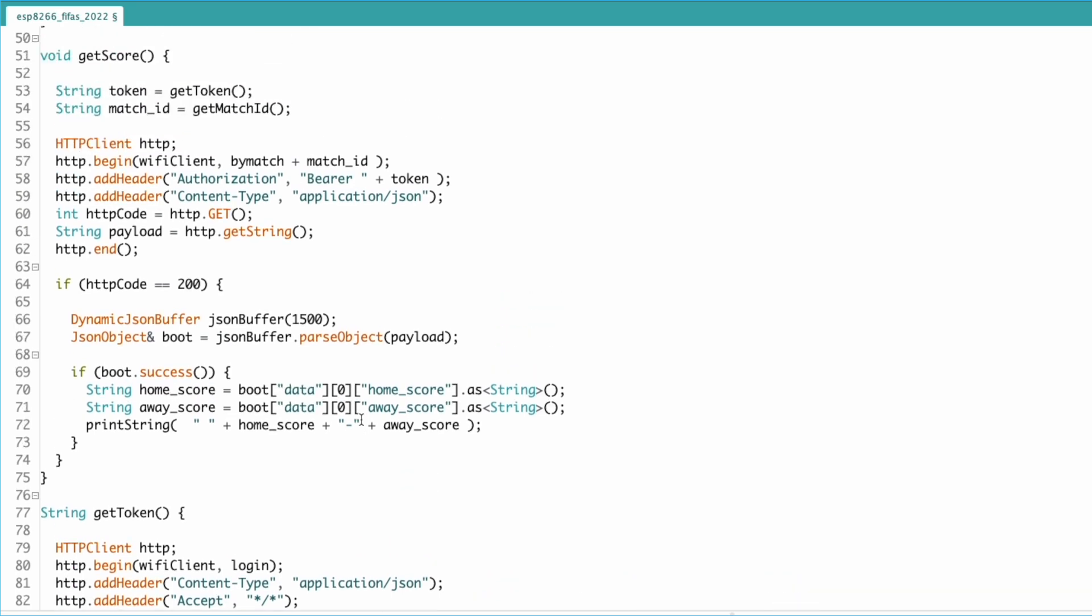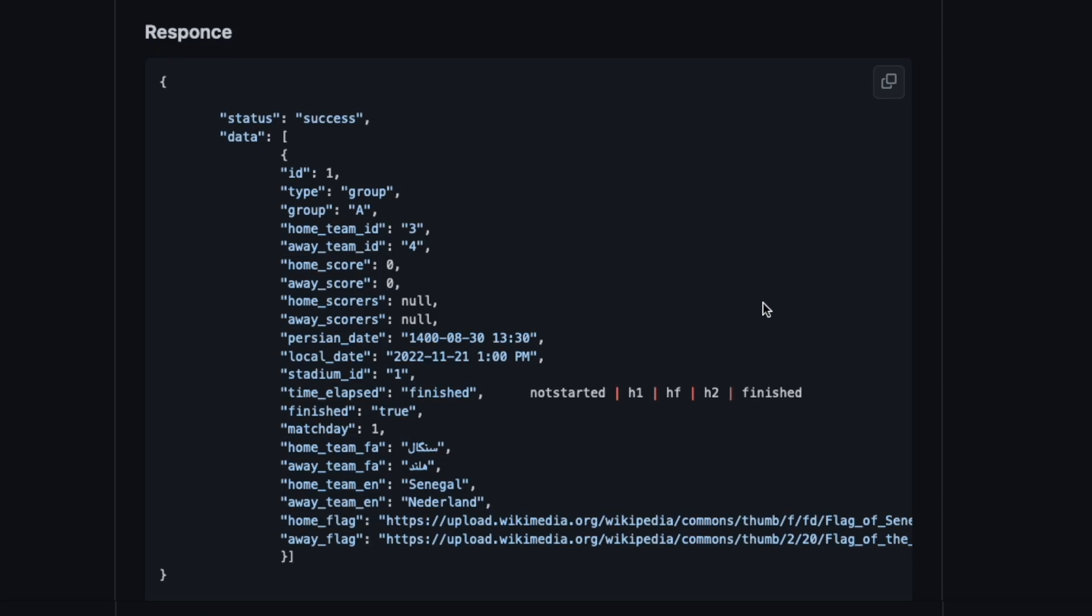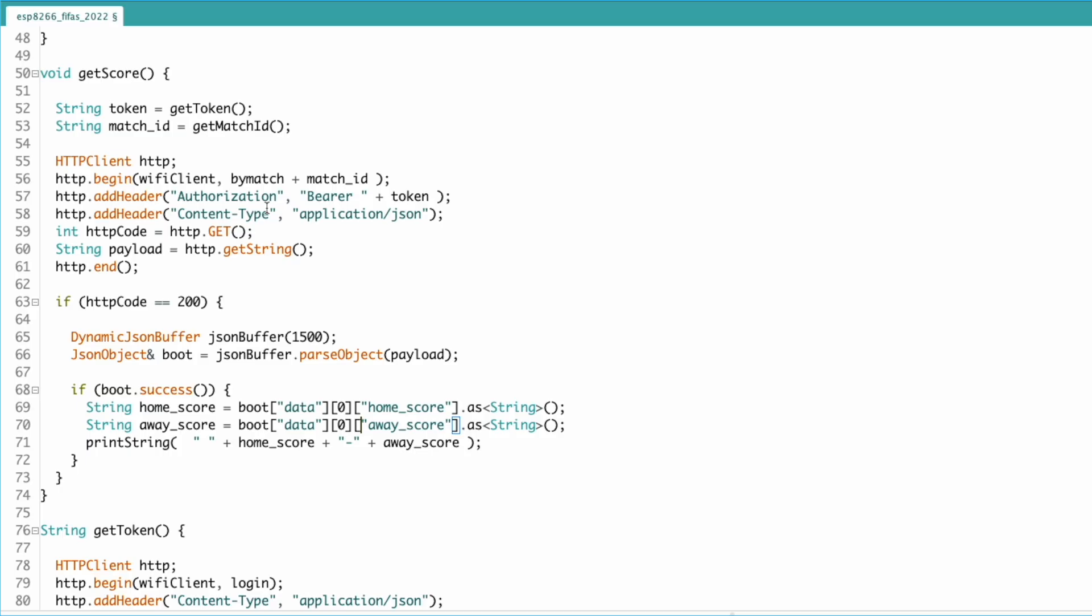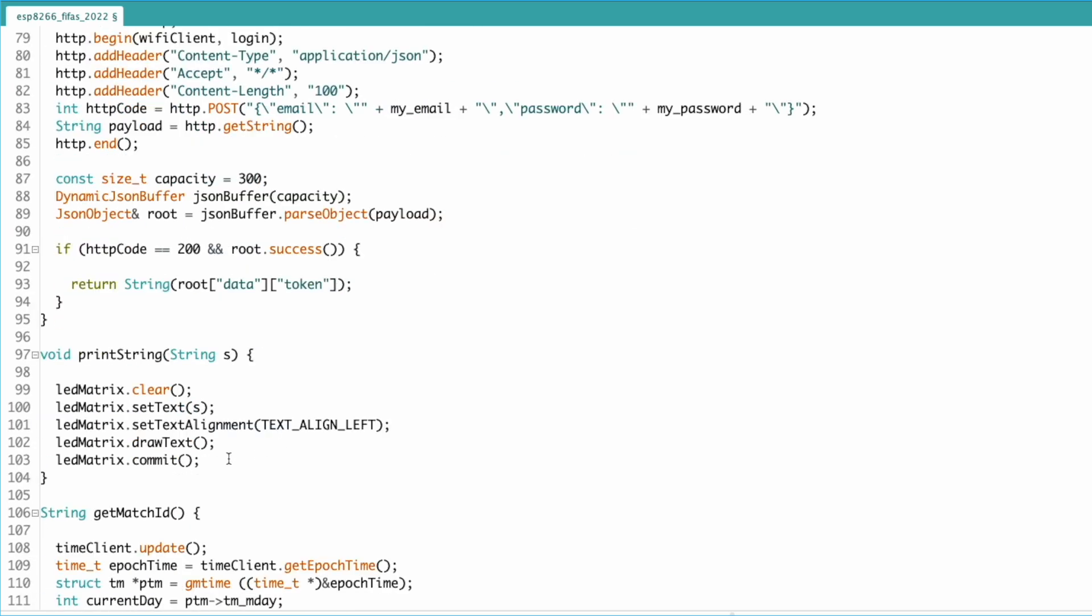Once that ID is obtained, another call is made to fetch the live scores, and it returns something that looks like this. The scores are then extracted and displayed on the LED matrix. But of course, this can be changed to anything you want, like an OLED screen, a self-hosted web server, or a push to an MQTT server—anything really.